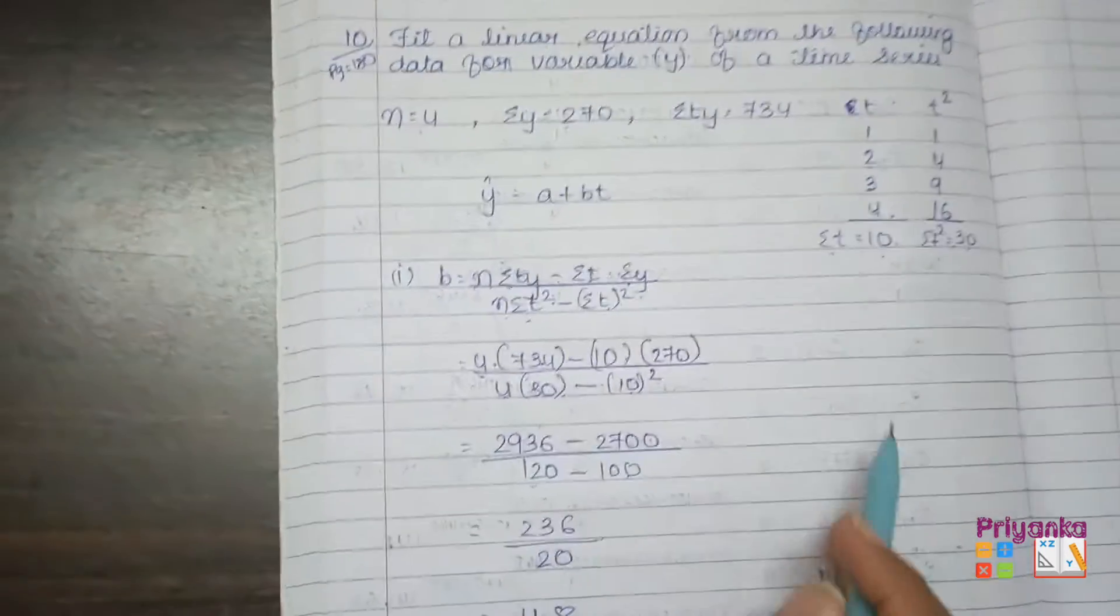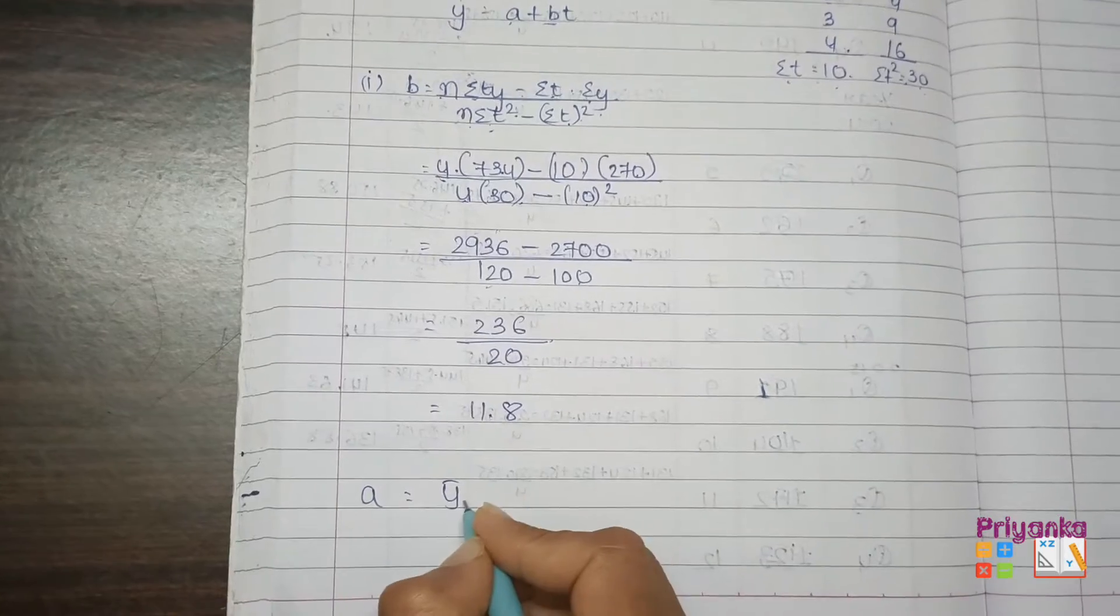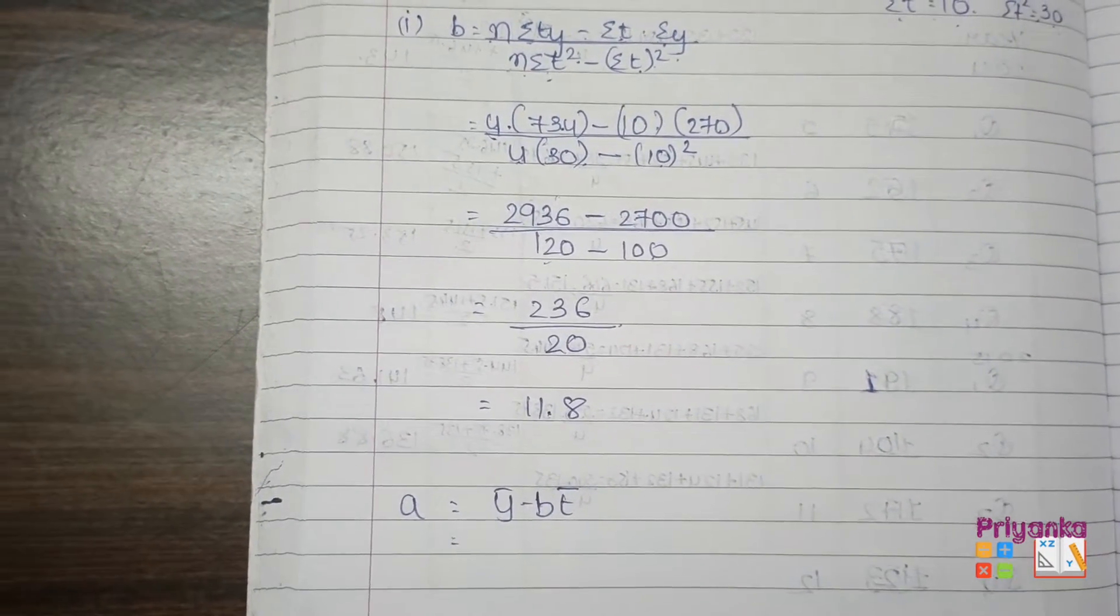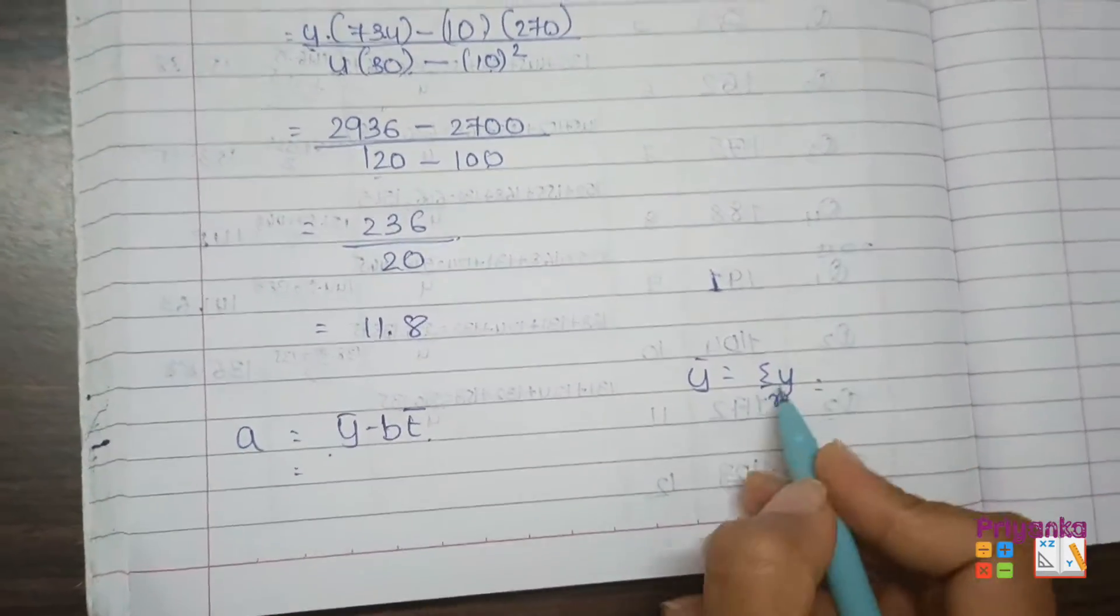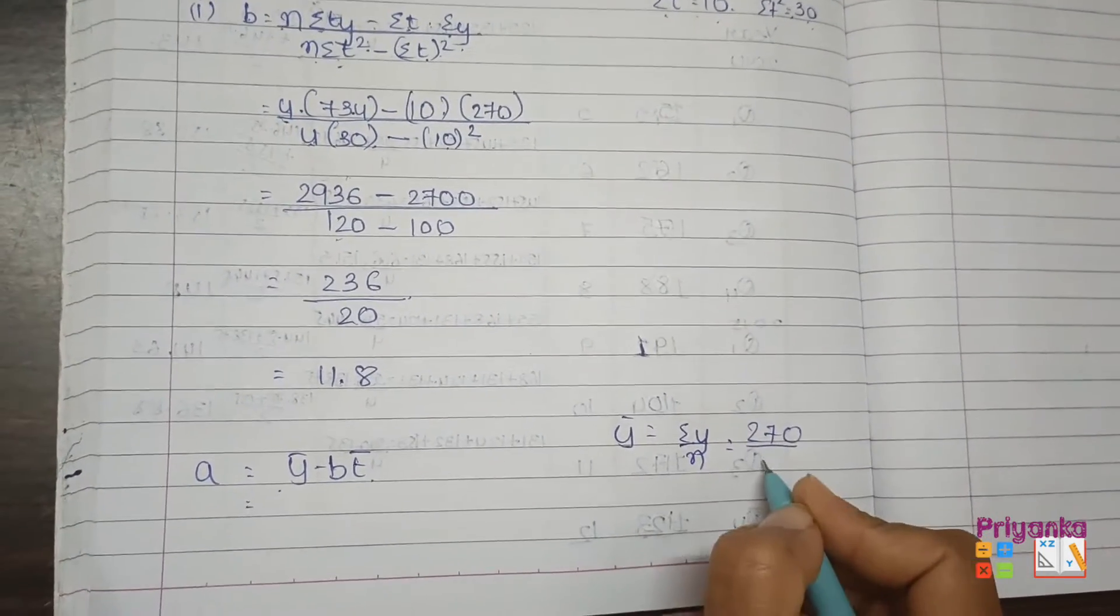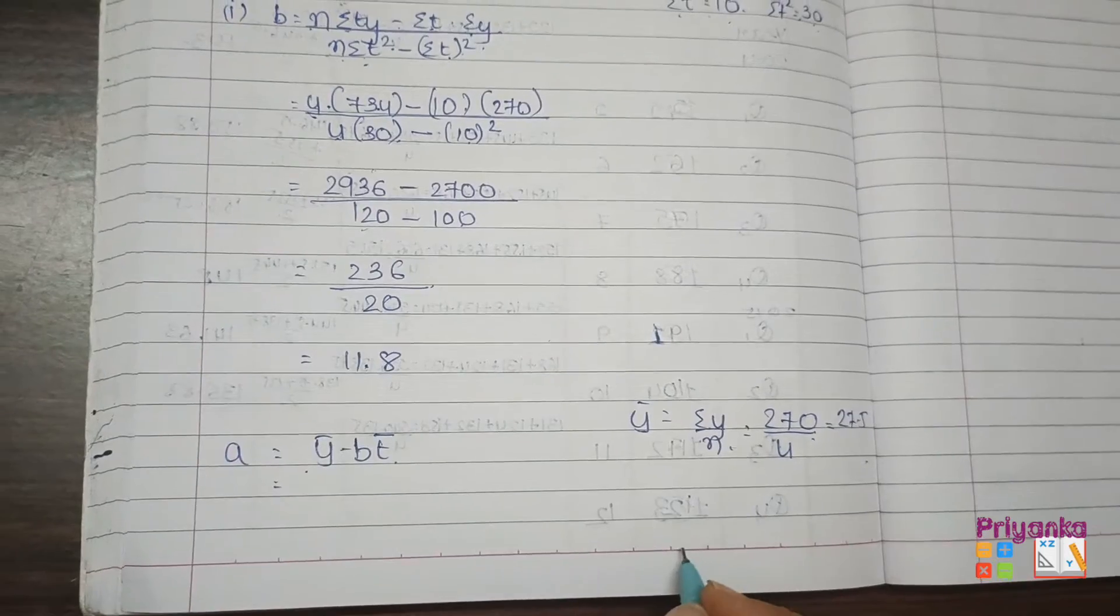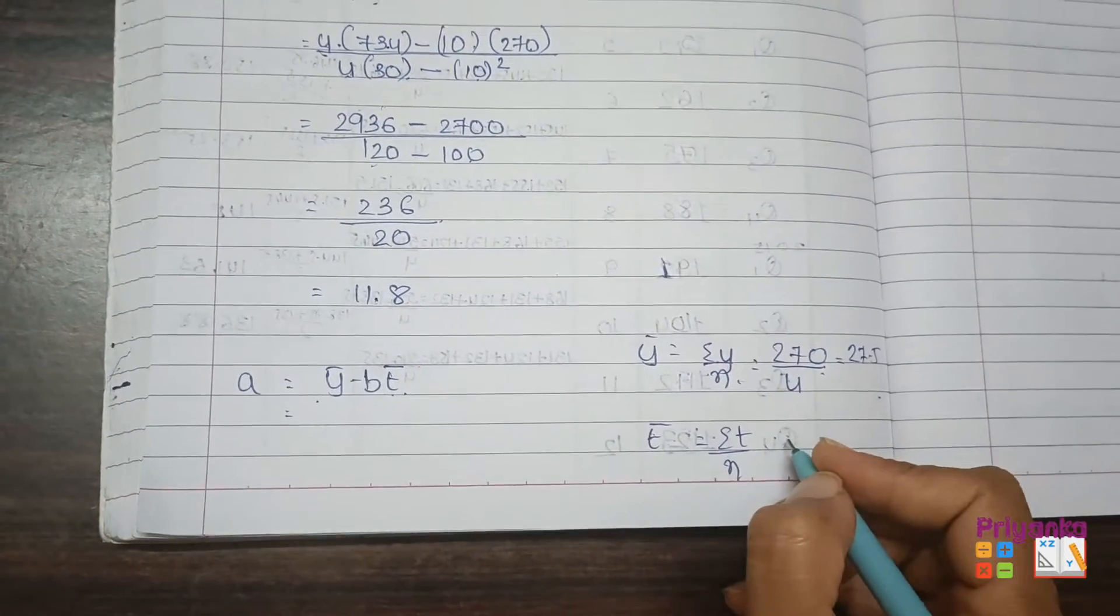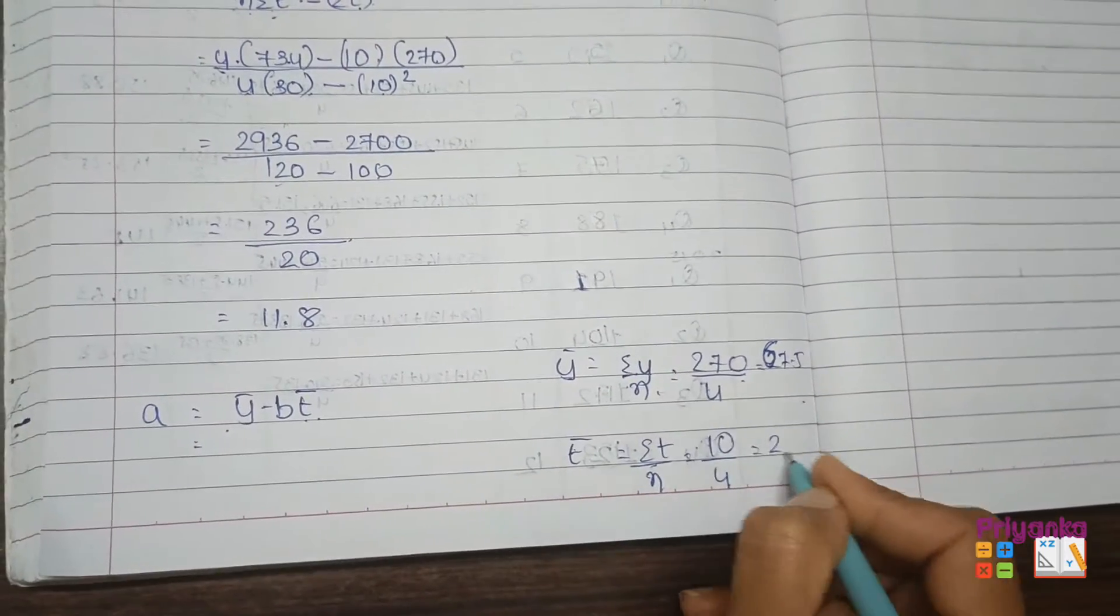Next we need a. The formula of a is y bar minus b t bar. Now to find out y bar, we need sigma y upon n. Sigma y is 270 divided by n which is 4. If you do the calculation, you will get 67.5. The next we need is t bar, that is sigma t upon n.